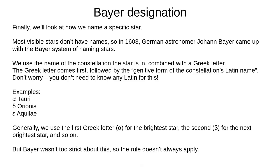Finally today, we'll look at how we name stars. There are about 5,000 stars visible to the naked eye, and most don't have proper names like Betelgeuse, Aldebaran, and Polaris. So in 1603, German astronomer Johann Bayer came up with the Bayer system of naming stars. Each star has a Bayer designation — a Greek letter followed by the Latin genitive name of the constellation it's in, but don't worry, you don't need to learn Greek or Latin to use it. Thus, stars have names like Alpha Tauri, Delta Orionis, and Epsilon Aquilae.